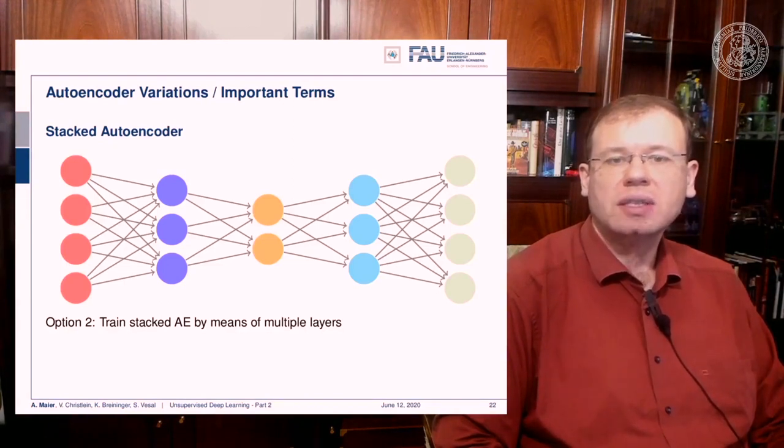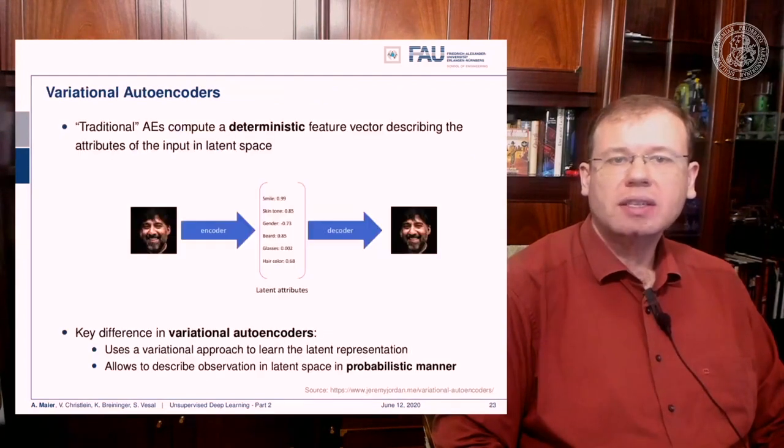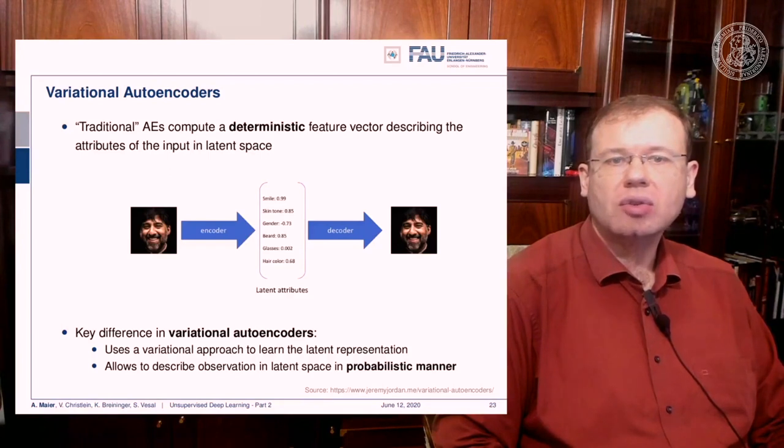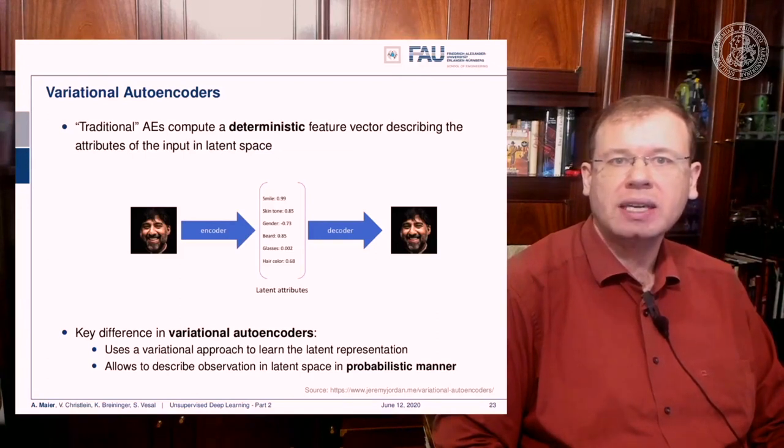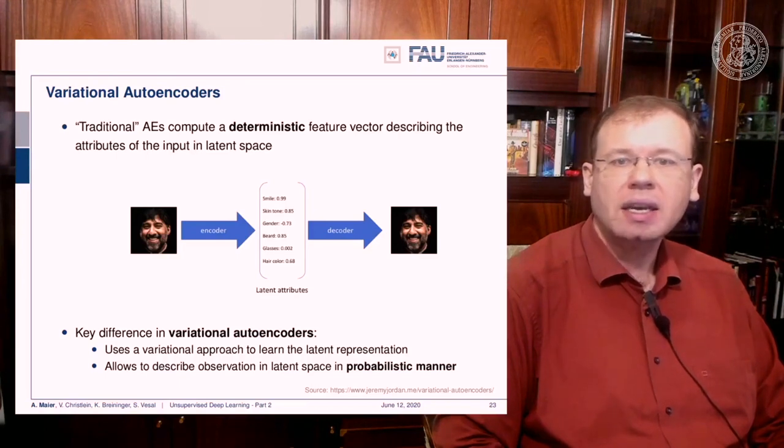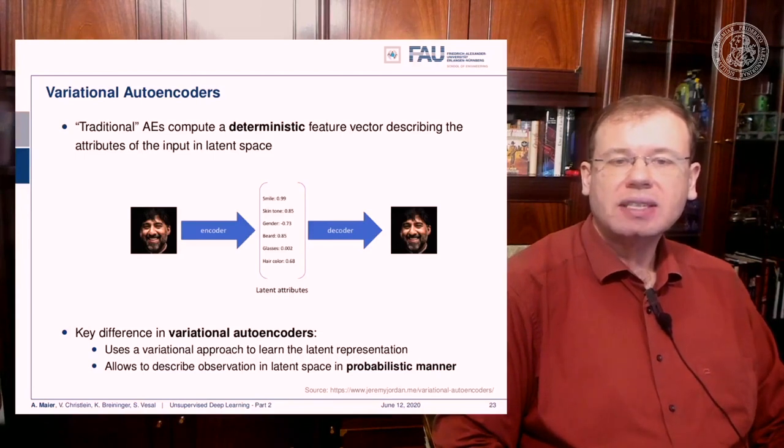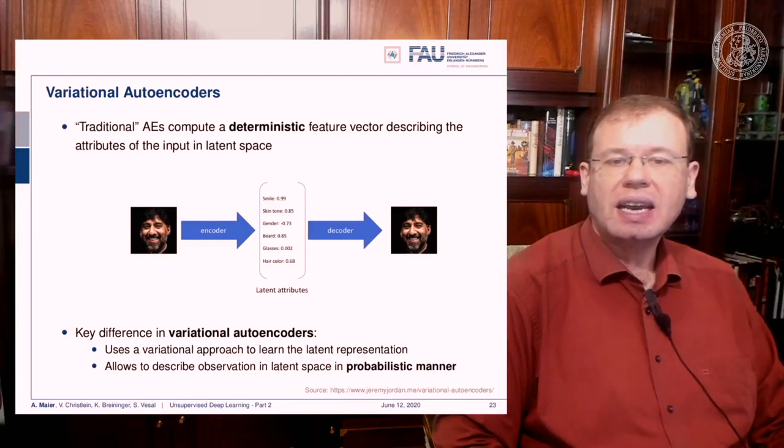Now let's go into the concept of the variational autoencoders, and this is a bit of a different concept. So in the traditional autoencoders, you try to compute a deterministic feature vector that describes the attribute of the input in some kind of latent space. So let's say you had a latent space that characterizes different features, for example of a face, then you could argue that this encoder then takes the image and projects it onto some probably unknown latent attributes. Here we give them some additional interpretation. So for every attribute you have a certain score, and from the score then you generate the original image again.